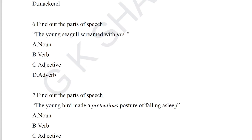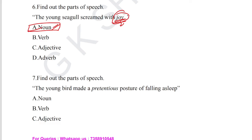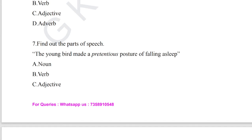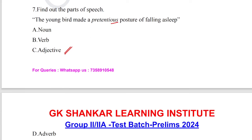Question number 6: find out the parts of speech — 'The young seagull screamed with joy.' Question number 7: 'The young bird made a pretentious posture of falling asleep.' Pretentious ends in O-U-S, so it is an adjective. Adjective is the answer for question number 7.